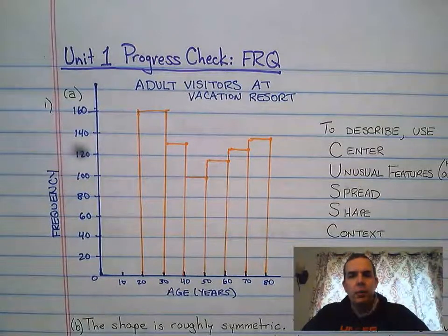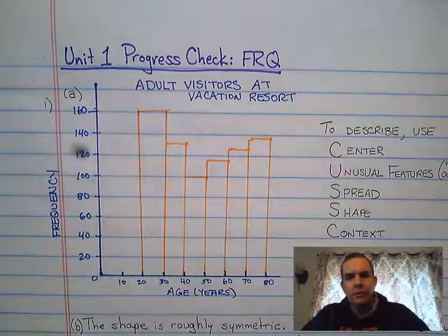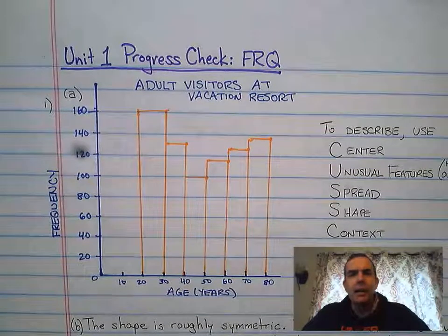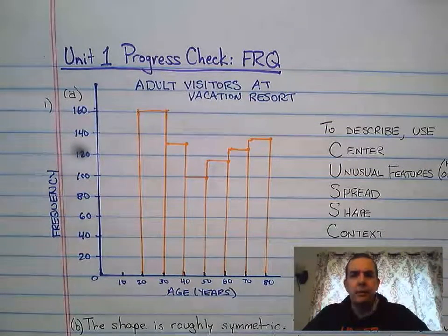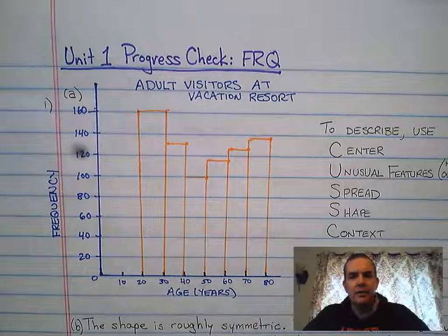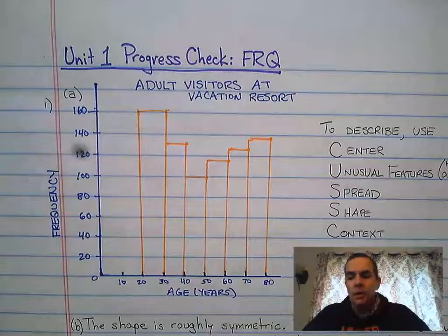Good morning, everyone. We're going to start this review with the Unit 1 progress check free response question, Part A, which asks you to provide a histogram for a given set of data about adult visitors at a vacation resort.